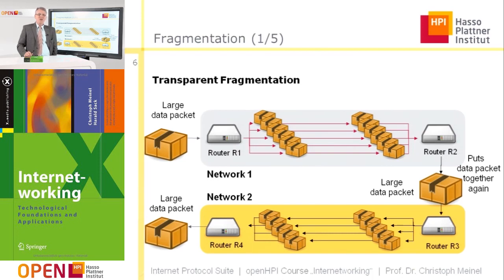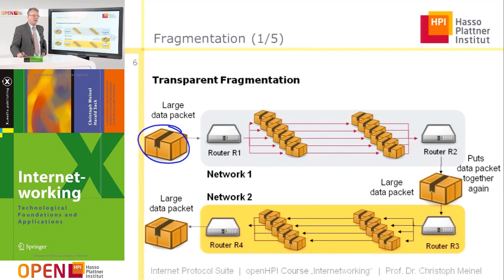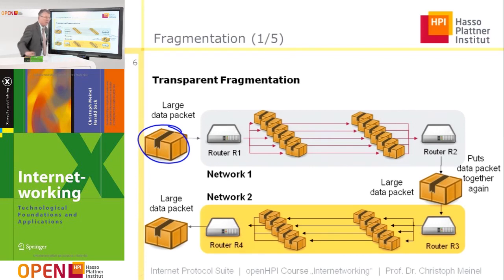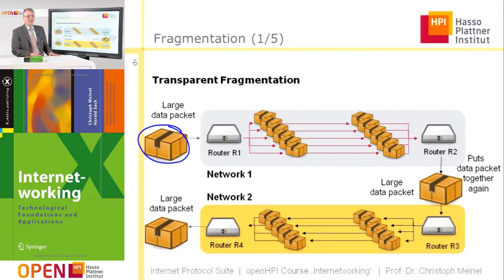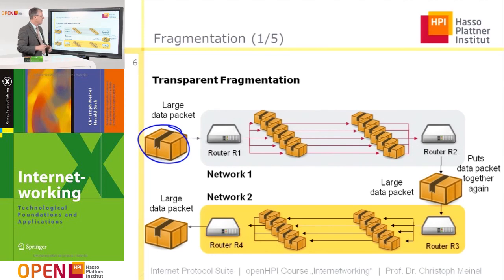Now let's have a closer look at fragmentation and how it is solved in the internet. Starting with a large data packet that reaches a router, the router sees that this data packet is too large to be sent through network one. So router one takes this large data packet and fragments it into fragments of the right size to be transported through network one. Router one also adds administration information to each fragment, including receiver and sender addresses — creating significant overhead.